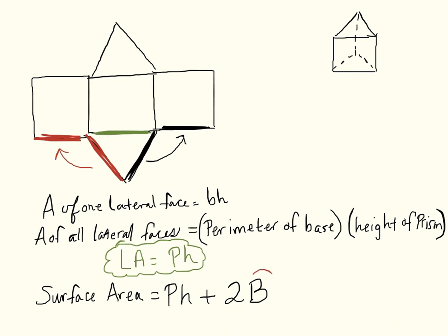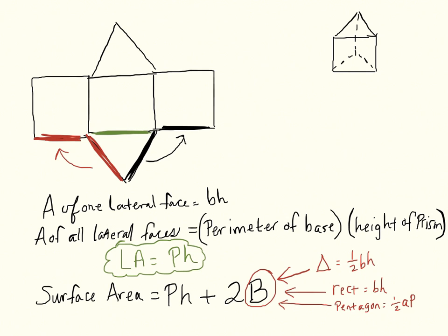The base area is whatever the actual base of the prism is. If the base is a triangle, it's one-half base times height. If the base is a rectangle, it's base times height. If the base is a pentagon, it's one-half apothem times perimeter. I do have a different video explaining how to find the area of a regular pentagon, hexagon, or similar shapes.